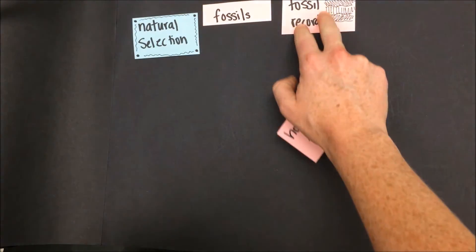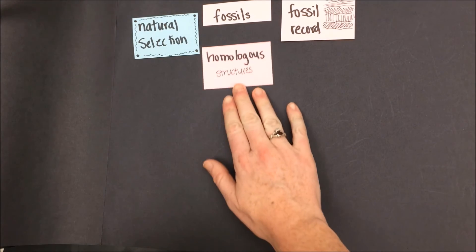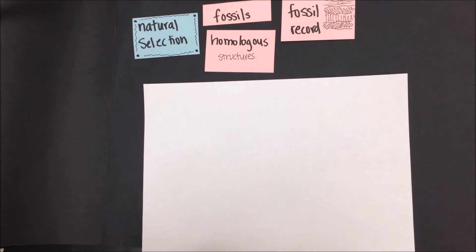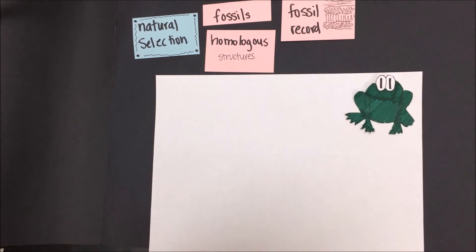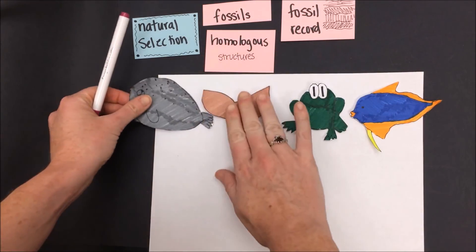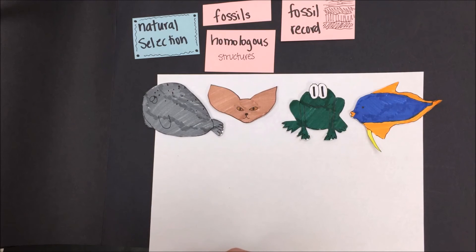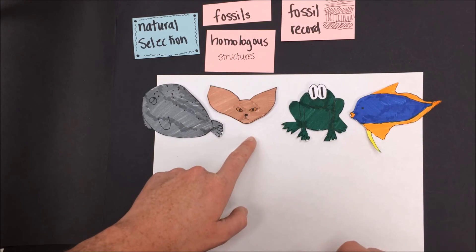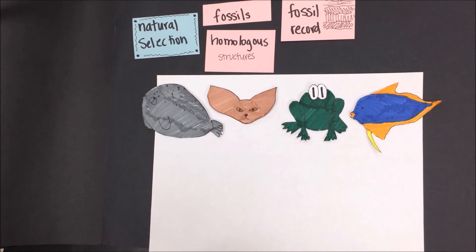We can also find evidence for the theory of natural selection in homologous structures. Homologous structures are structures that are similar in different species. Although they may not be used for the same purpose, they have similar structures. A frog, a fish, a fox, and a seal all have front limbs. They use these limbs for different things. Some for jumping, some for swimming, some for digging. The bones in these limbs are similar in structure, suggesting a common ancestor. However, it might be a long way back before these organisms are actually related.